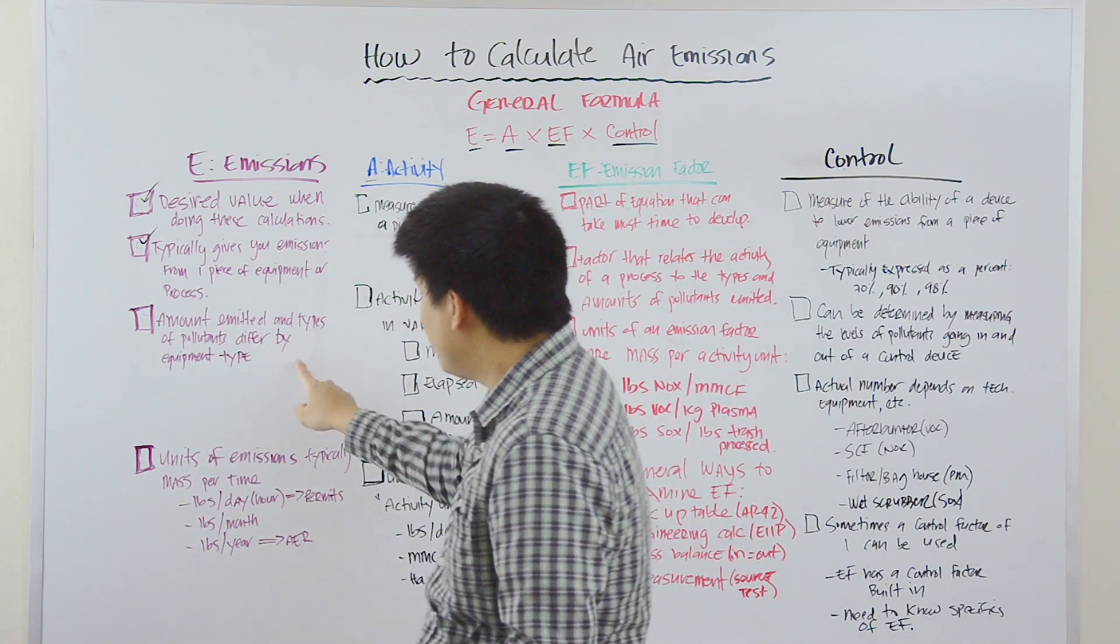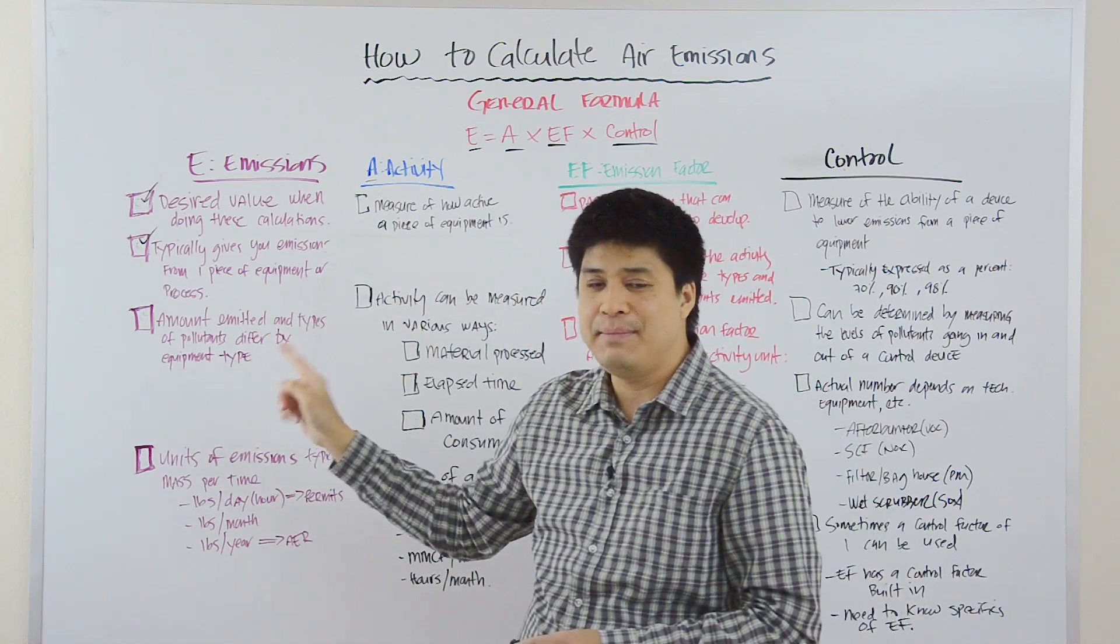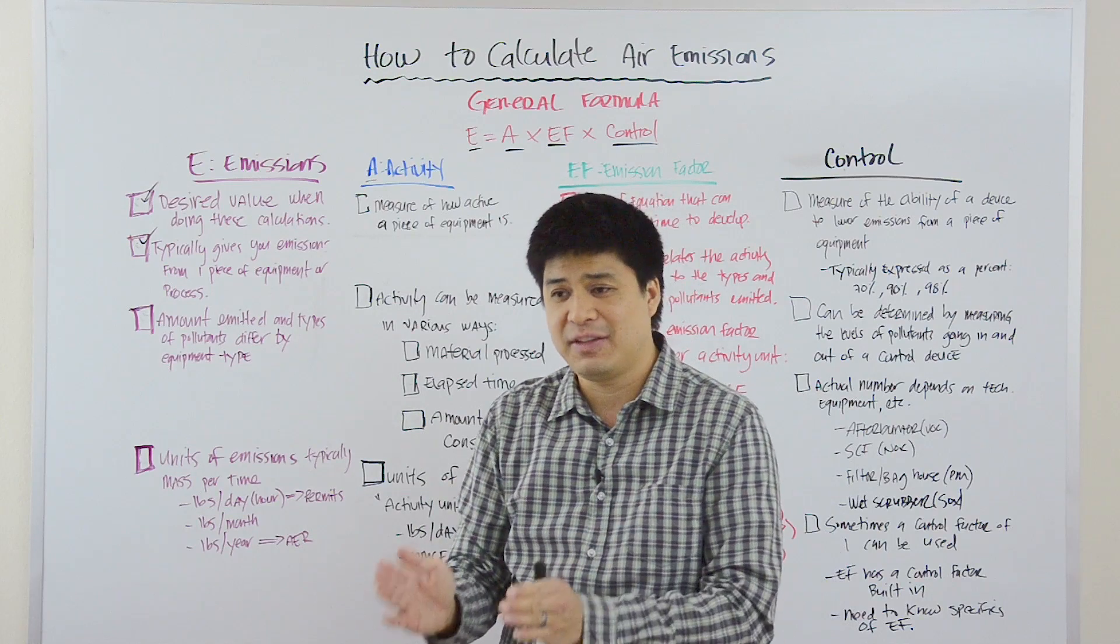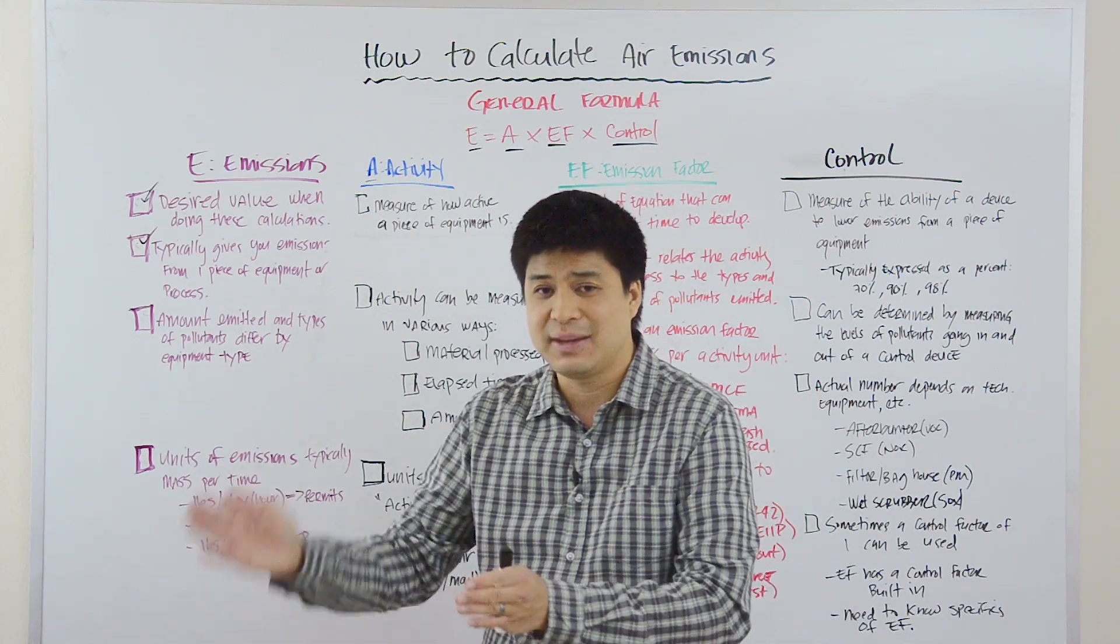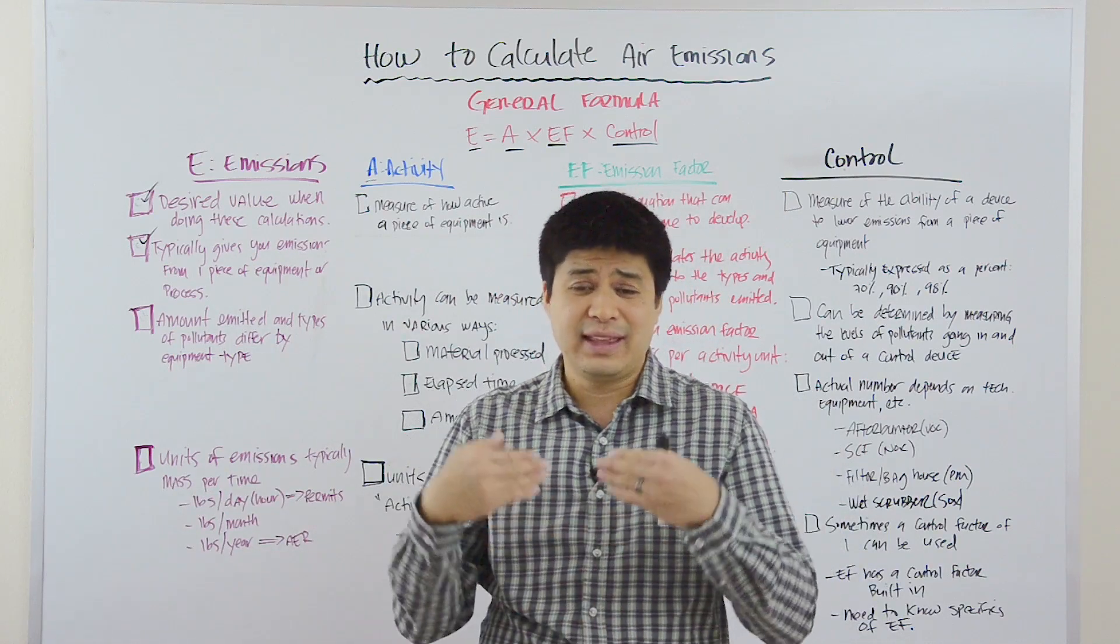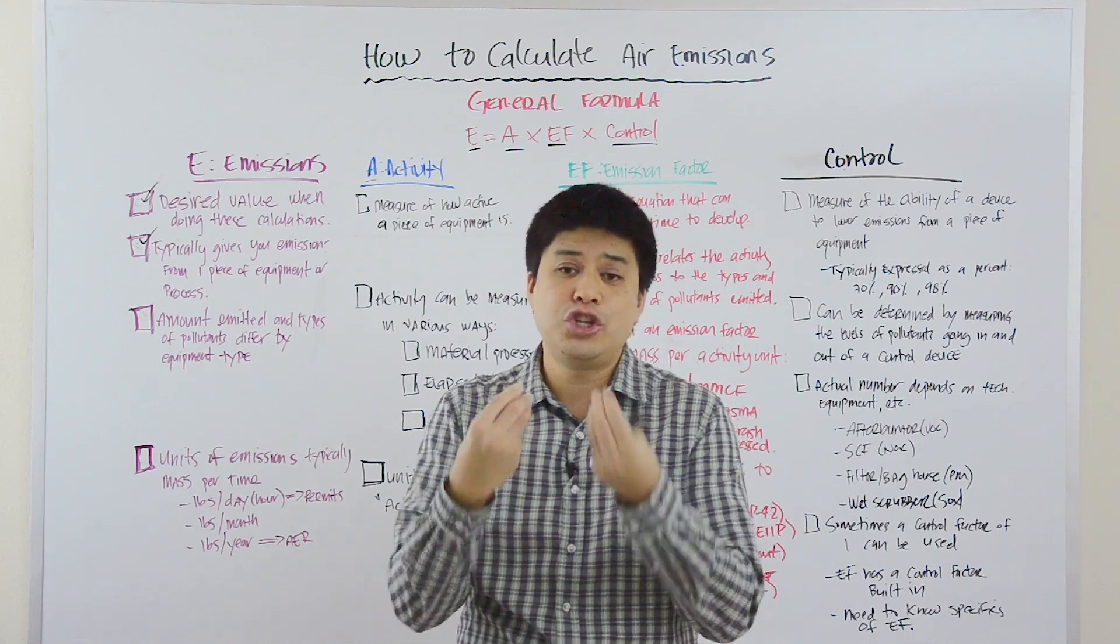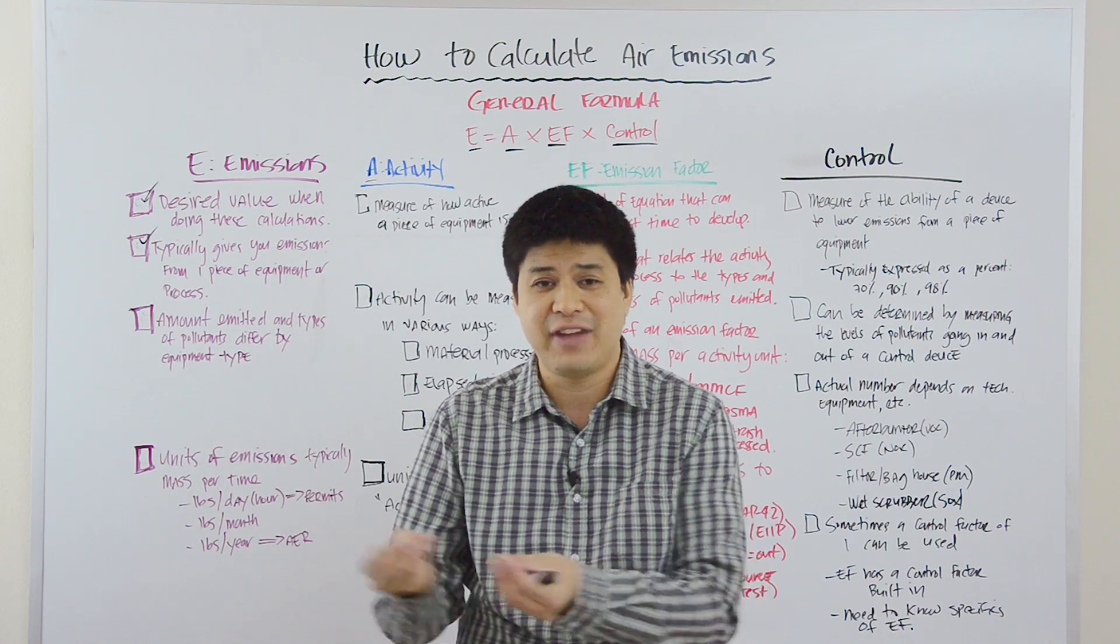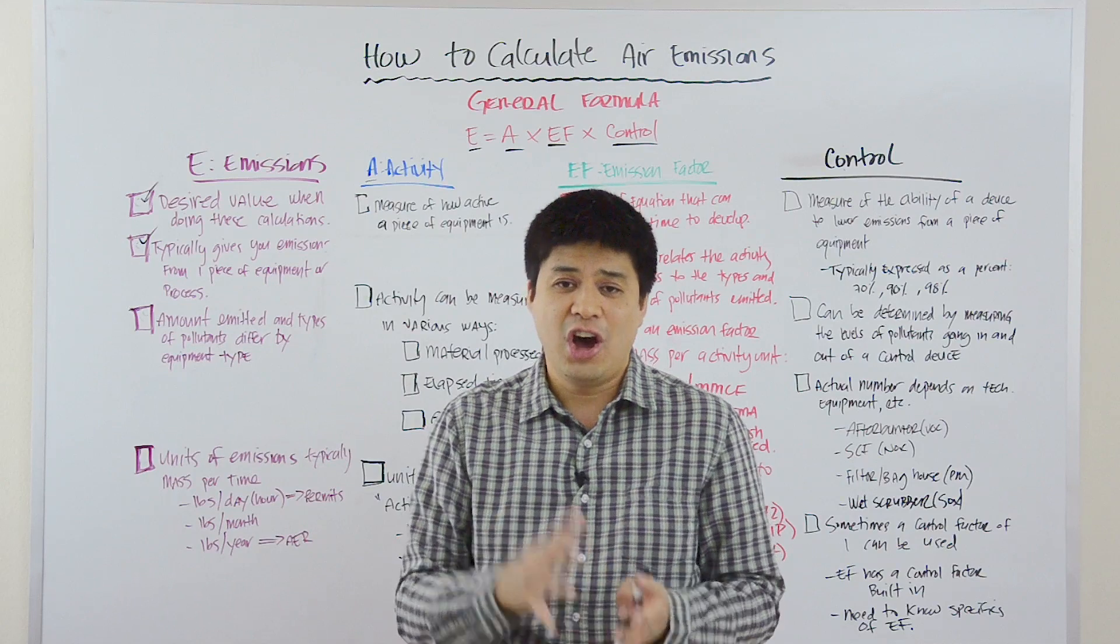Now, moving on, it's important to note that the amount emitted and the types of pollutants emitted by a specific process or by a specific piece of equipment will vary from equipment to equipment, from process to process. So as an example, if you have a storage tank with gasoline, then you should only see emissions of organic compounds because those are the evaporative losses from the gasoline being stored in the tank.